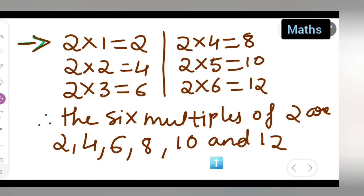So I hope you have understood how to write the first 6 multiples of 2. We are writing the multiples of 2, but only the first 6 multiples. These are the first 6 multiples of 2.